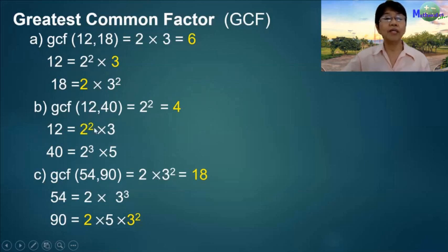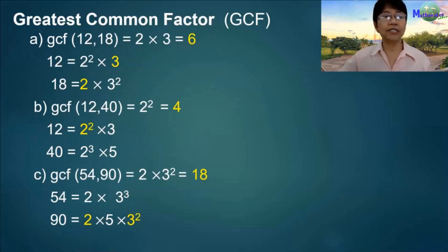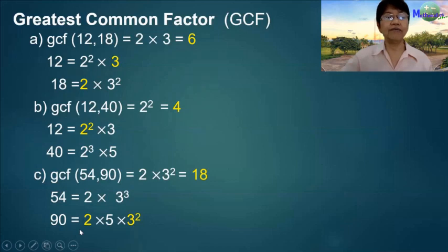Another example: we have 2-cubed and 2-squared as common factors; we choose the factor raised to the least power, which is 2-squared, so the GCF is 4. Letter C: for 54 and 90, the GCF is 2 times 3-squared, which equals 18.